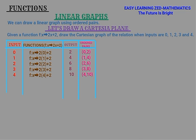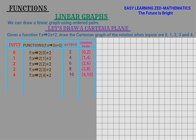Now we have found all the ordered pairs from the inputs and outputs. We have (0,2), (1,4), (2,6), (3,8), and (4,10). Next, we're going to draw a Cartesian graph. I'm going to bring the graph paper here and mark and number it.